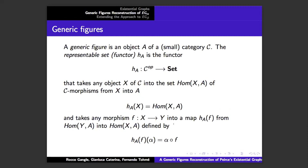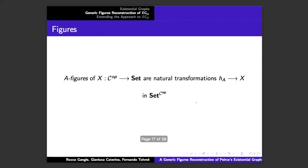Most of you are probably familiar with this object, even if you don't call it a generic figure. A generic figure is the object A of a small category C. Then H of A — which I think in current terminology people usually call a representable functor — is the presheaf from C op into Set that takes each object into the hom-set of its arrows going into A, with a map on morphisms in terms of precomposition.